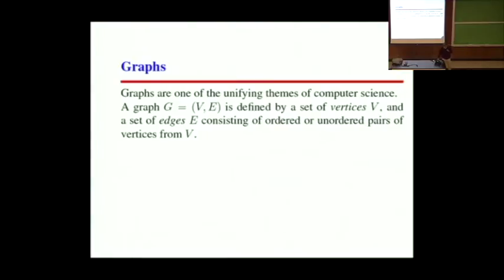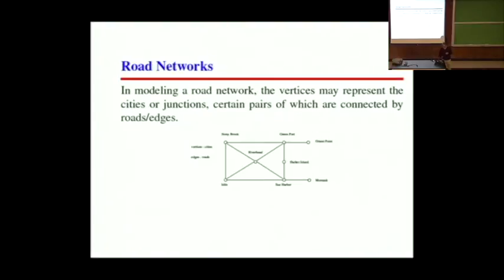If you learn to think in terms of what is the graph, good things can happen. So what is a graph? A graph is a thing defined by a set of vertices, which we will call V, and a set of edges E, which are either going to be ordered pairs of vertices or unordered pairs of vertices, depending on whether we want a directed graph or an undirected graph. Basically, the edges of a graph are just pairs of vertices.